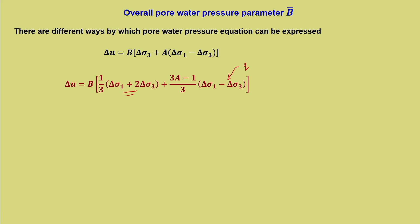What is (delta sigma 1 + 2 delta sigma 3) / 3? This is nothing but the mean stress for triaxial condition. We have seen it in terms of P-dash, but here it is P — a total stress condition. So, mean stress is P and deviator stress is q. Skempton's pore pressure equation can thus be rewritten in terms of mean stress and deviator stress.